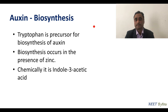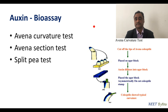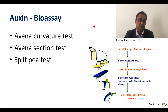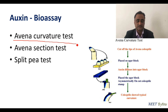Bioassays are tests that tell us the activity of a hormone. For auxin, three bioassays are very popular: first, the Avena curvature test; second, the Avena section test; and third, the split pea test.